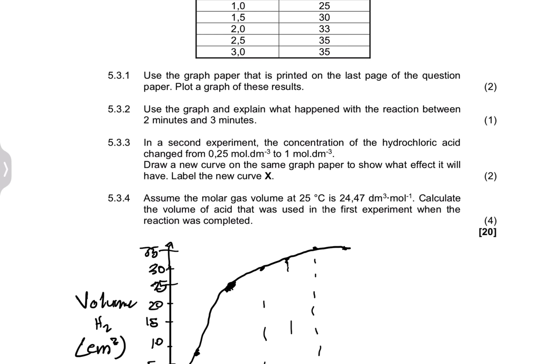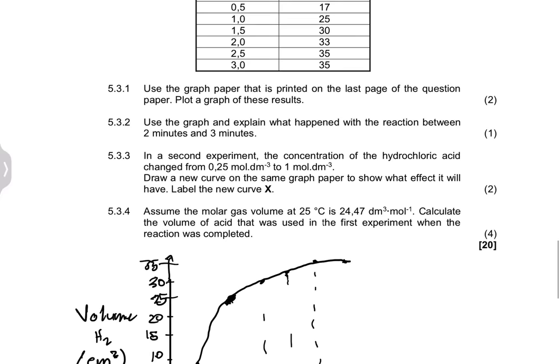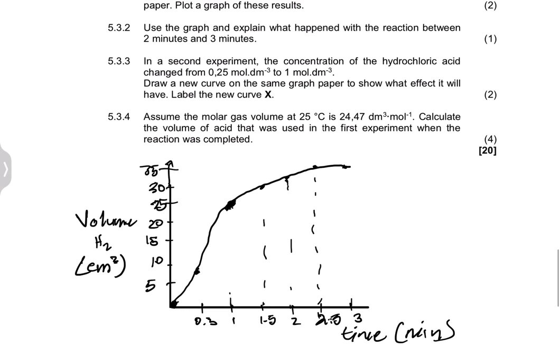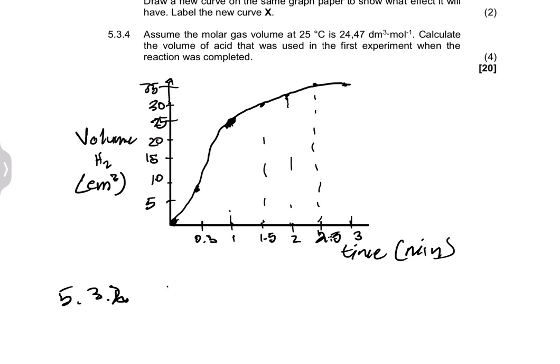They say use the graph to explain what happens to the reaction between 2 minutes and 3 minutes. Between 2 and 3 minutes the graph becomes constant, which means you are running out of one of your reactants — or the reaction reaches completion.